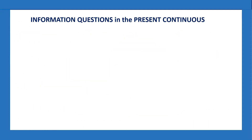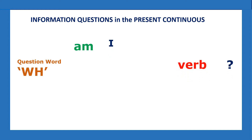Let's see how to form information questions in the present continuous. The first word is the question word: who, what, where, when, what time, why, how. Then we have the verb 'to be' — 'am.' What is the subject with 'am'? That's right — 'am I.' Then you have the verb, but what do you need at the end? I-N-G. For example: What am I doing?